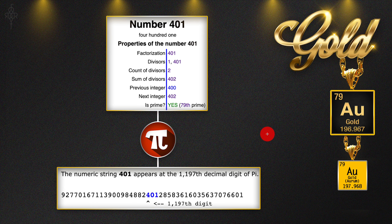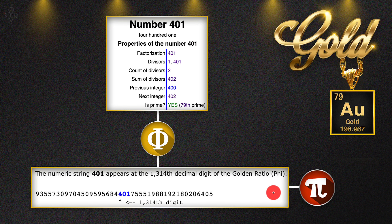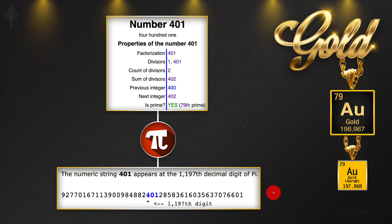When we take this 401 and bring it into the string of pi, once again we get another source code outcome. 401 begins at the 197th decimal digit. The 197 here is the other stable isotope of gold itself — it's right there. This is how tightly woven gold is into our simulation and into our source code reality, with pure mathematics from the golden ratio showing pi and then pi showing gold, going right back to gold again.